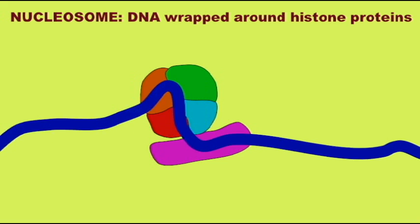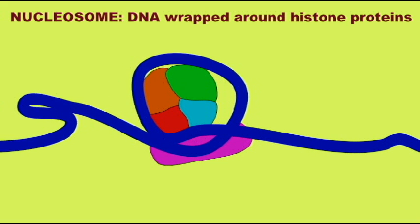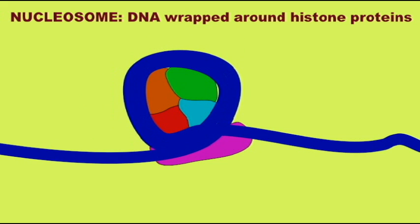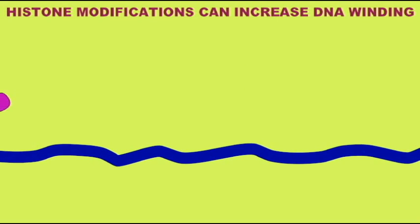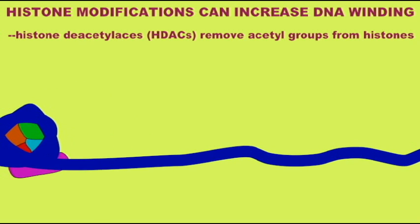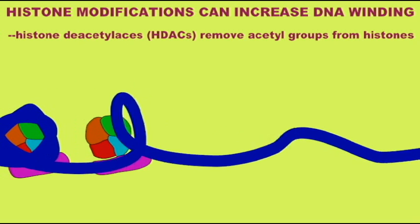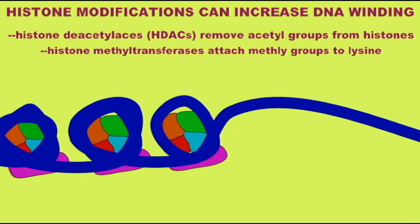Other changes to histone proteins can cause DNA to pack more tightly and the coils to tighten in a way that will increase heterochromatin formation and inhibit gene activity. This can be done by attaching methyl groups to certain lysine residues. For example, the methylation of lysine residues 9 and 27 on histone H3 will inhibit transcription.